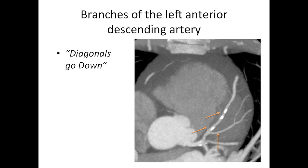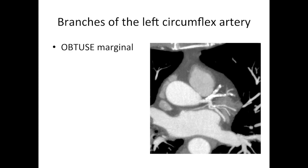The diagonal branches are named consecutively in numerical order, so this is the first diagonal branch. Branches of the left circumflex artery are called obtuse marginal branches, and again these are numbered consecutively — you have the first obtuse marginal, the second obtuse marginal, and so on.